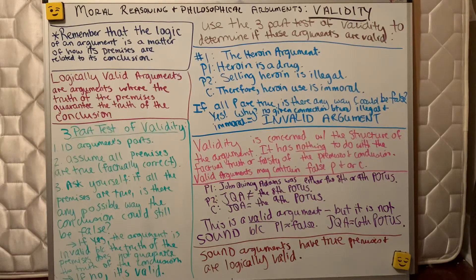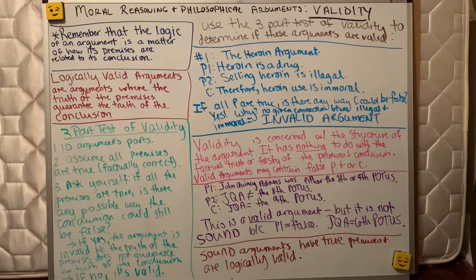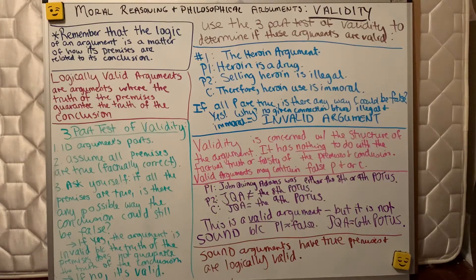Let's go over to our practice argument from The Fundamentals of Ethics — we'll start with the heroin argument. Premise 1: heroin is a drug. Premise 2: selling heroin is illegal. Conclusion: therefore, heroin use is immoral.